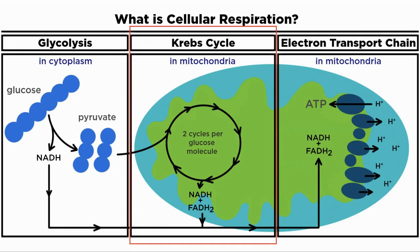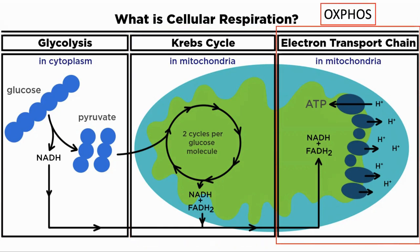The next two steps produce the bulk of the energy and take place in the mitochondria, which is why the mitochondria are called the powerhouse of the cell. The metabolites of glycolysis go into the mitochondria, where they are further metabolized in the Krebs cycle. This requires oxygen and creates high-energy electrons, which are attached to NAD and FAD, and so has a high requirement for NAD to function. These go on into the third phase, where they are passed down the electron transport chain.